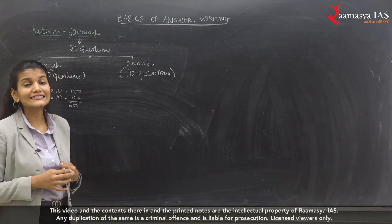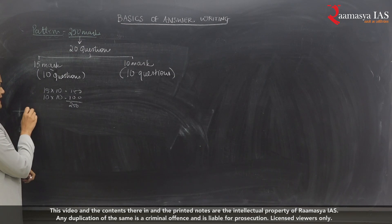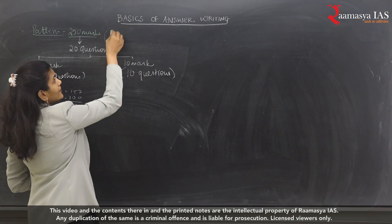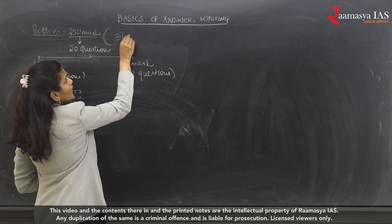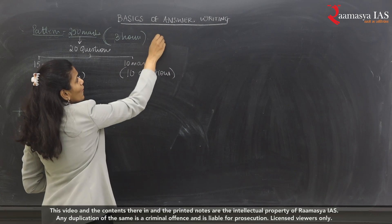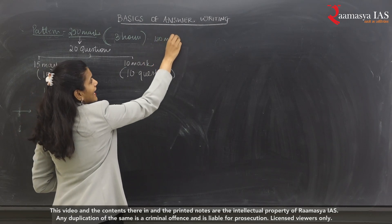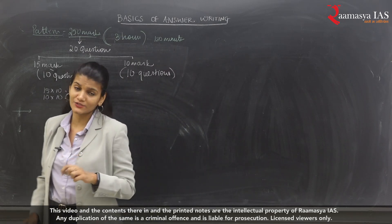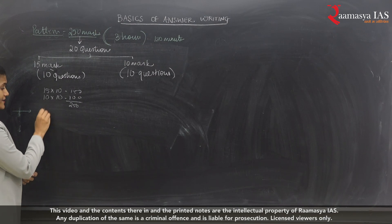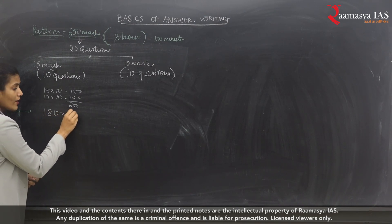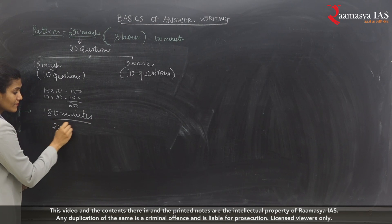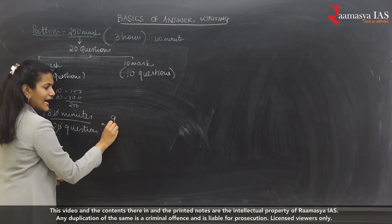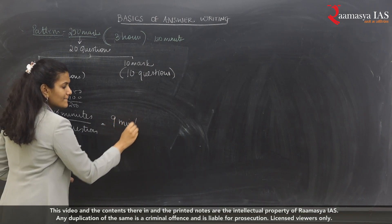Let's understand how much time is generally available to attempt this 250-mark paper. We have around 3 hours, i.e., 180 minutes in hand. So with 180 minutes to attempt 250 marks across 20 questions, for a single question you will get approximately 9 minutes per question on average.